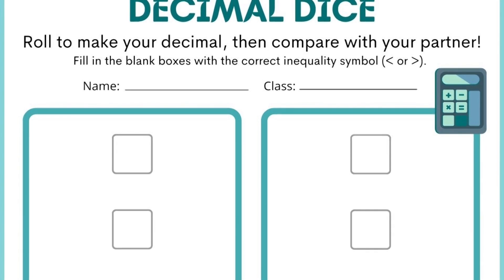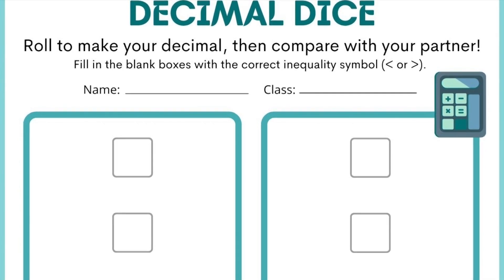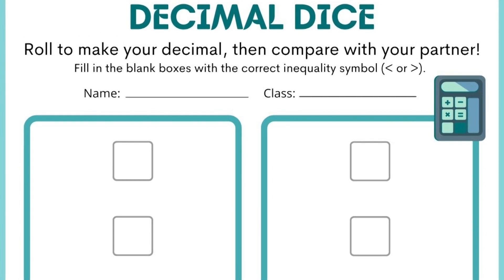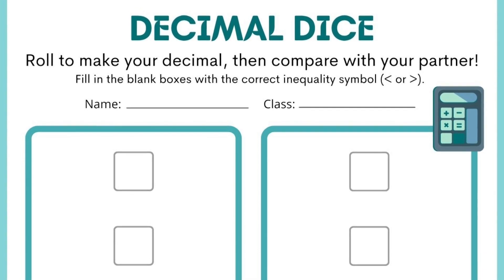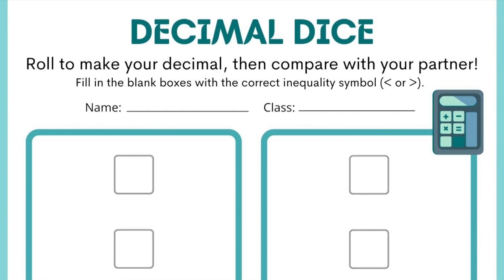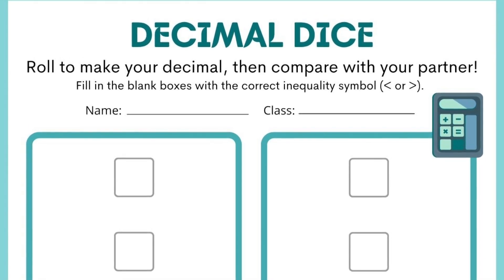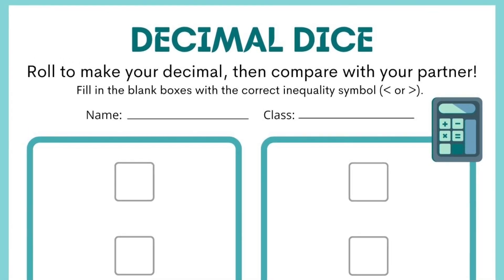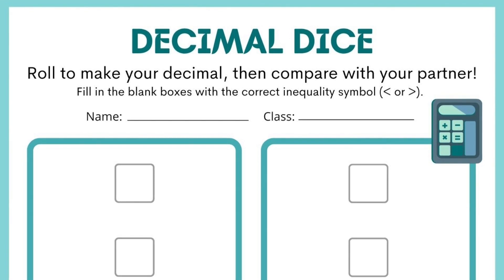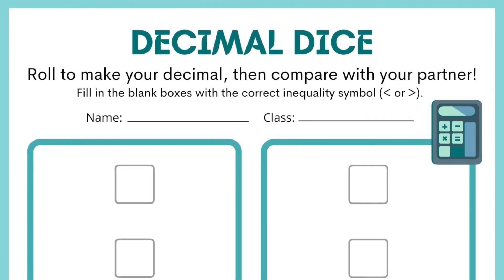Once students have rolled their own number, they copy down their partner's number and discuss whose is bigger and why, putting the appropriate greater than, less than, or equal to symbol in the box.